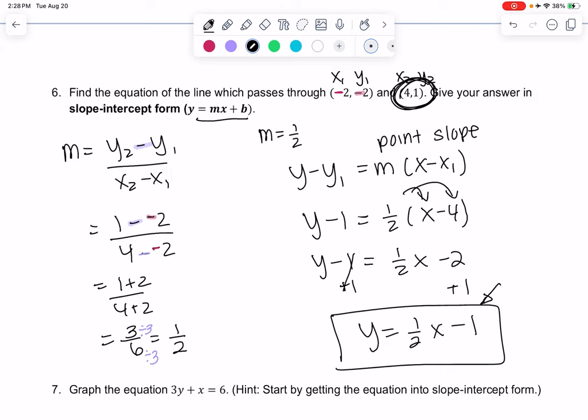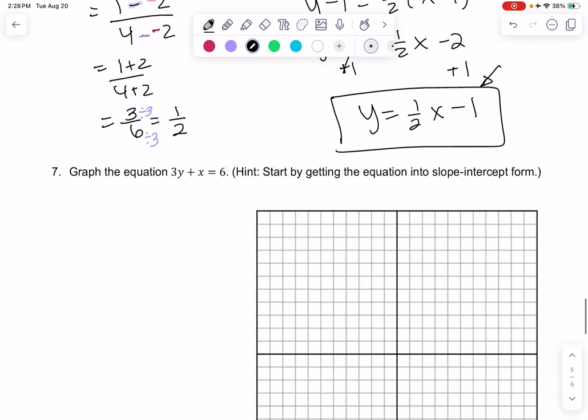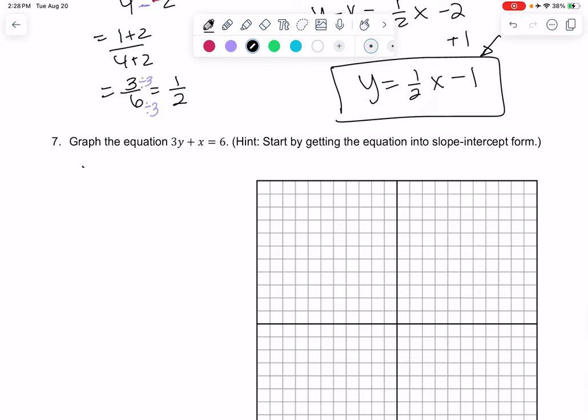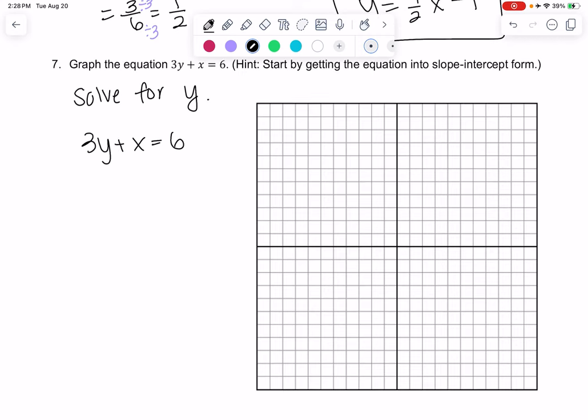In example 7 we're going to rewrite it in slope intercept form and then graph to review graphing. To rewrite it in y equals form, solve for y. We have 3y plus x equals 6. Move x to the other side: 3y equals negative x plus 6. When we divide, we divide everything by 3. Common mistake is to only divide the 6 by 3, but everything gets divided by 3. We get y equals negative 1 third x plus 2.